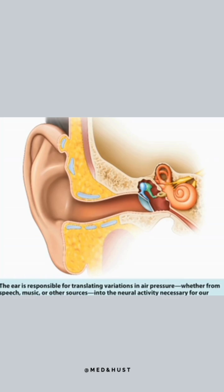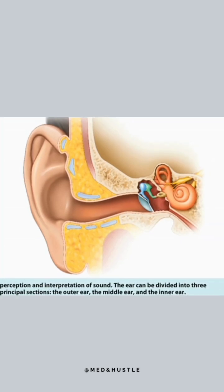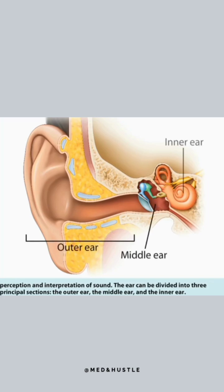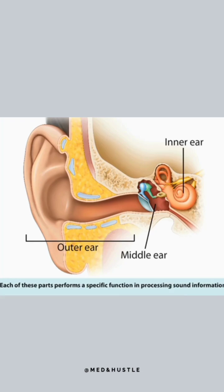The ear is responsible for translating variations in air pressure, whether from speech, music, or other sources, into the neural activity necessary for our perception and interpretation of sound. The ear can be divided into three principal sections: the outer ear, the middle ear, and the inner ear. Each of these parts performs a specific function in processing sound information.